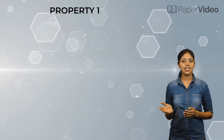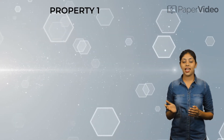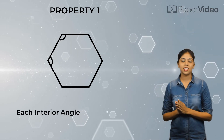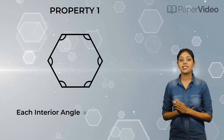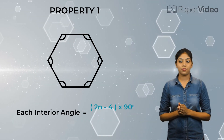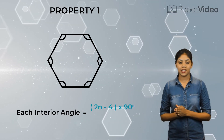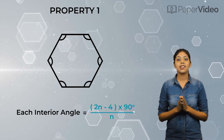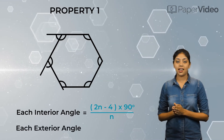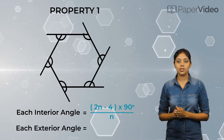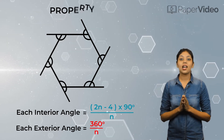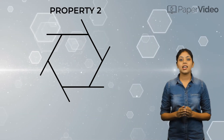According to the first property, if n is the number of sides of a regular polygon, then each interior angle is equal to (2n-4) × 90 degrees upon n, and each exterior angle is equal to 360 degrees upon n.